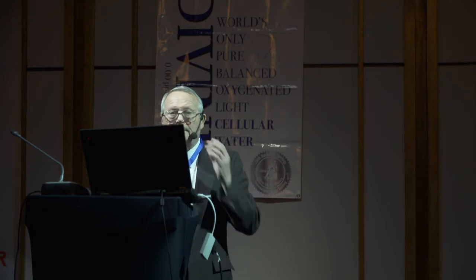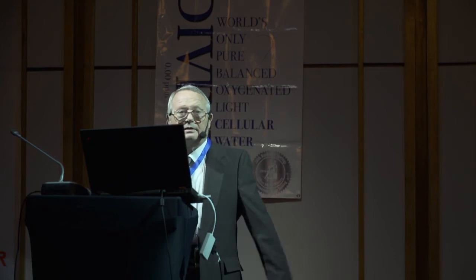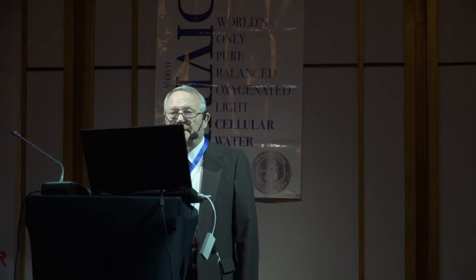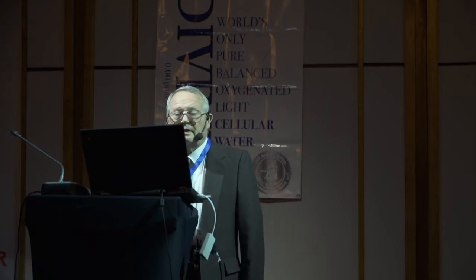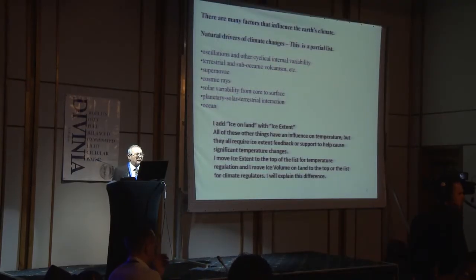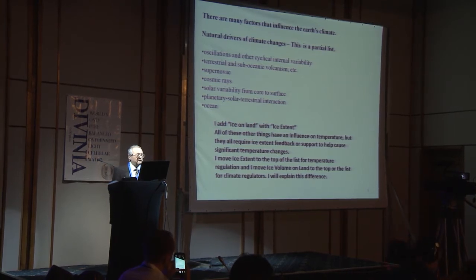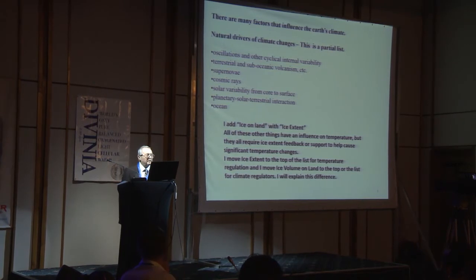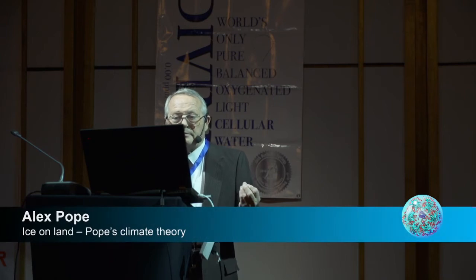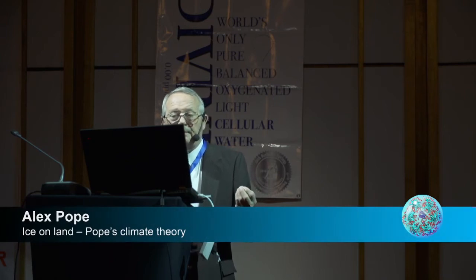When you talk to people that have studied climate, there's a lot of things that some people think drive the climate. The alarmists think that greenhouse gas CO2 is one of the biggest influences. Some people think Milankovitch cycles or cosmic rays — all kinds of things. But most of them say that these things start something going and then they get feedback from ice extent that helps make it work. I say take the ice extent and the ice on land and put it at the top of the list.